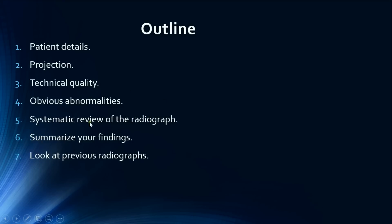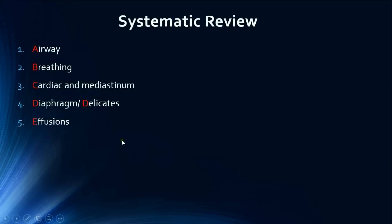Now for the systematic review of the radiograph, we use the ABCDE approach. A is for airway — the trachea — and the most important thing is whether it is central or deviated. B is for breathing — we inspect all lung fields for any lesions, paying special attention to the apices, the hila, and the costophrenic angles, as these areas are commonly missed. C is for cardiac and mediastinum — we look at heart size and any mediastinal widening, such as in masses or hemorrhage.